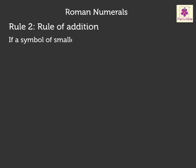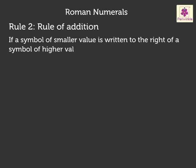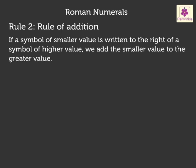Rule 2: Rule of Addition. If a symbol of smaller value is written to the right of a symbol of higher value, we add the smaller value to the greater value. For example, consider XI. X has a value of 10 and I has a value of 1, so the Hindu-Arabic number for this Roman numeral is 11.